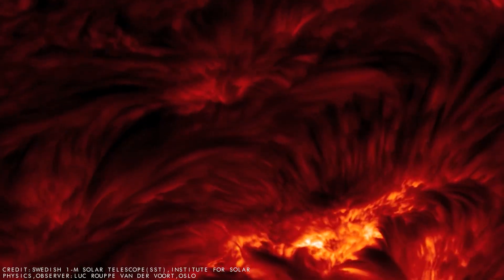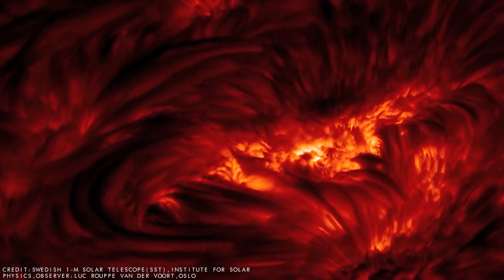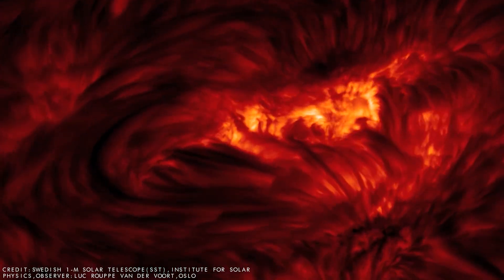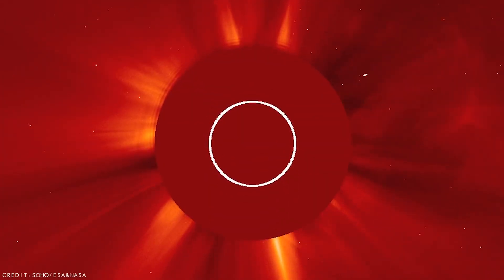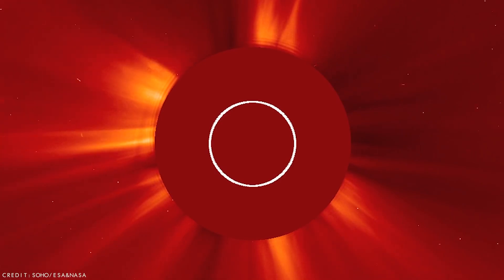Although some estimates place Betelgeuse farther away, it could be as close as 724 light years from Earth. Determining the distances of red supergiant stars like Betelgeuse remains a challenge for astronomy because of its great distance and peculiar characteristics.